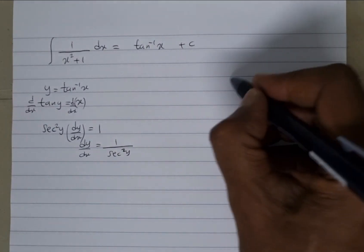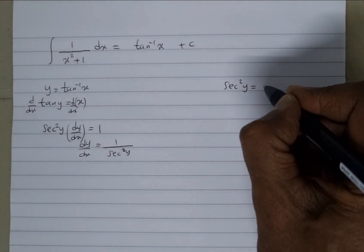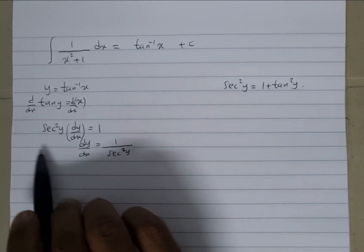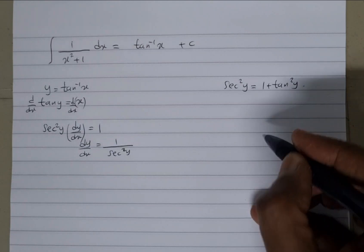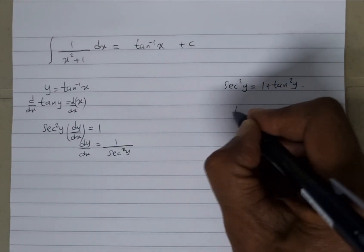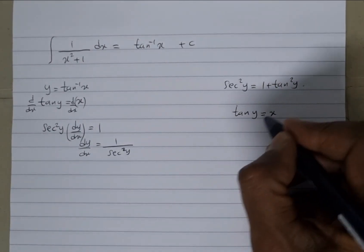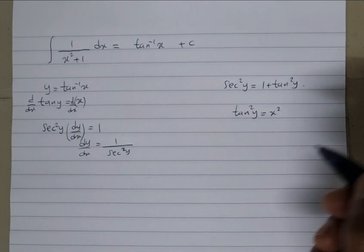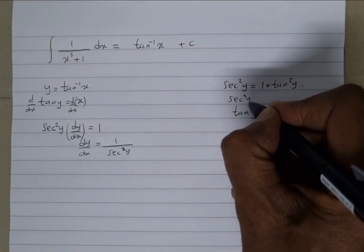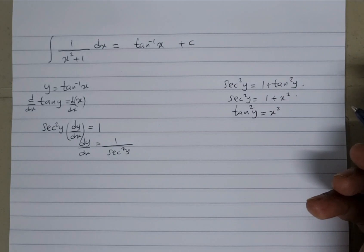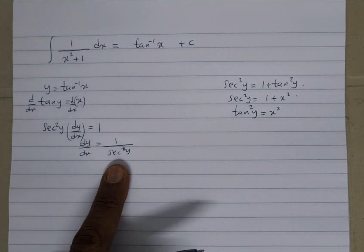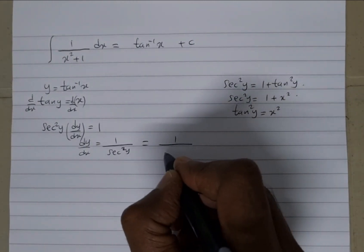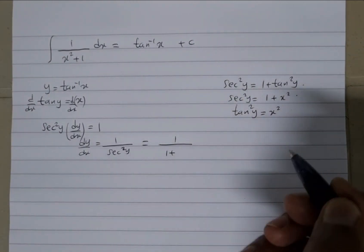So basically we're saying that dy/dx is going to equal 1 over sec squared y. And what do we know about sec squared y? We know that sec squared y is equal to 1 plus tan squared y. And we also know that tan y is equal to x, therefore tan squared y is going to be equal to x squared. So sec squared y is equal to 1 plus x squared.